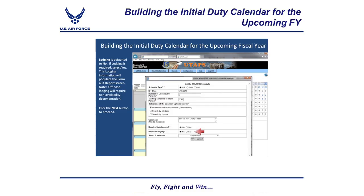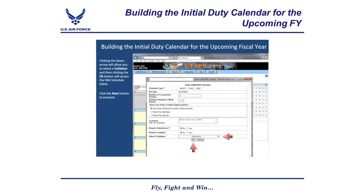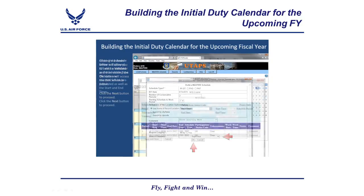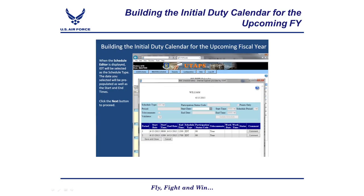Clicking the down arrow will allow you to select a validator, and then clicking the OK button will access the IMA Schedule Editor. When the Schedule Editor is displayed, IDT will be selected as the Schedule Type. The date you selected will be pre-populated as well as the start and end times. If any changes need to be made, clicking on the period that needs to be modified will allow you to make modifications to the information in the fields near the top of the form. If any changes are made to the schedule information, the Update Schedule button should be clicked to save these changes.